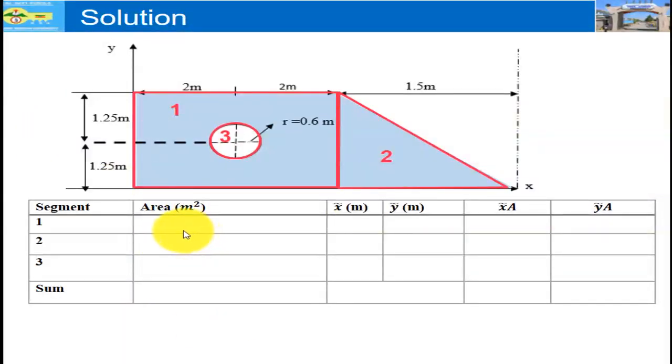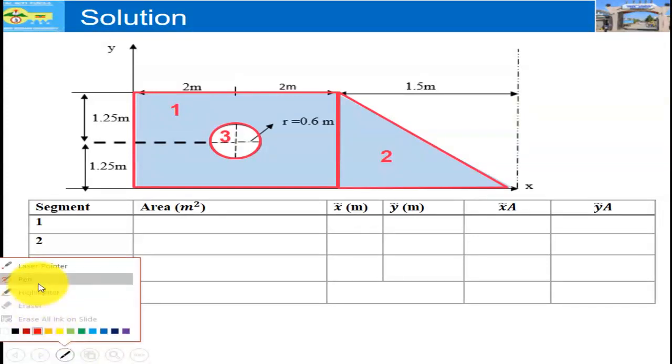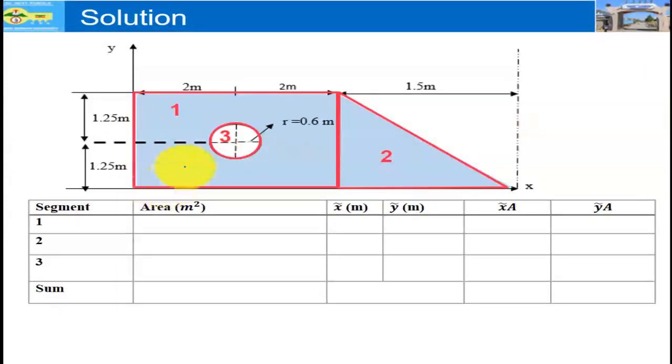Let us start by calculating area of shape one. Shape one is rectangle. Area of rectangle is base times height. Base is 2m plus 2m equals 4. Height is 1.5 plus 1.5 equals 2.5. So area of shape one is 10 m².